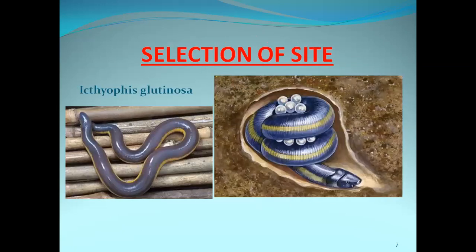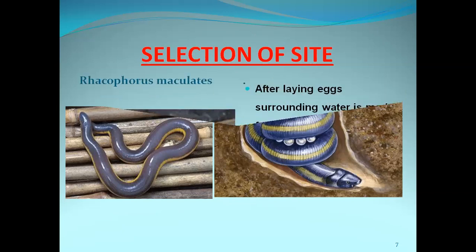A fourth example is Ichthyophis glutinosa. Ichthyophis glutinosa also constructs a burrow in the mud or sand. In that burrow, they lay the eggs and coil around those eggs to protect them. This is also an example of selection of sites.